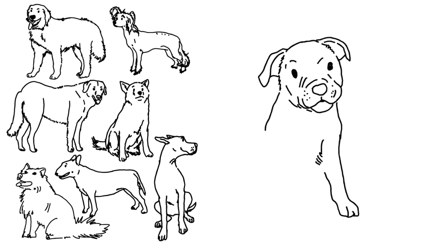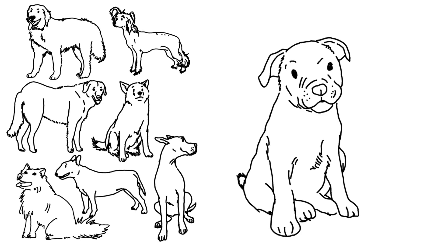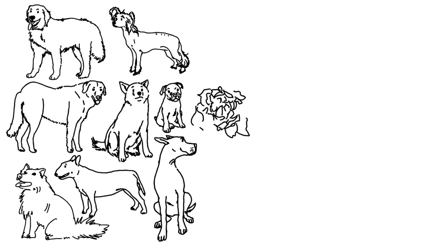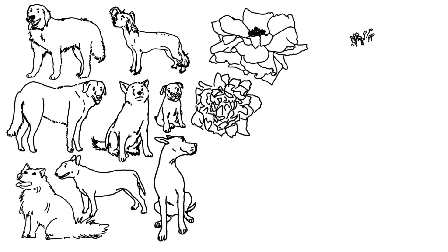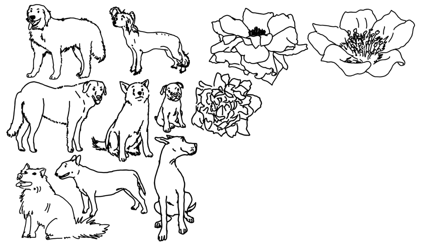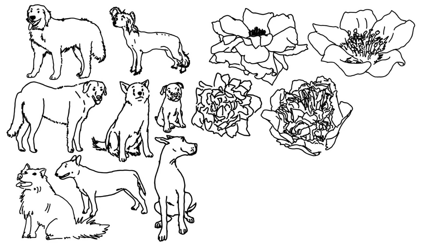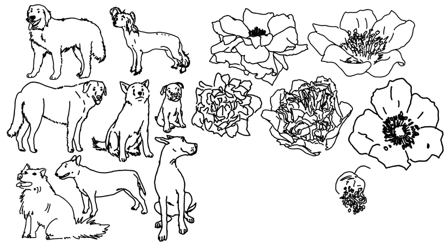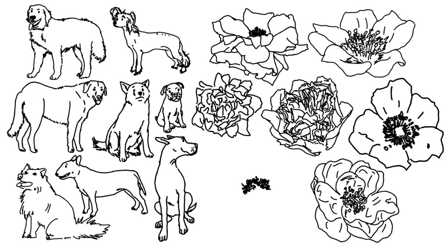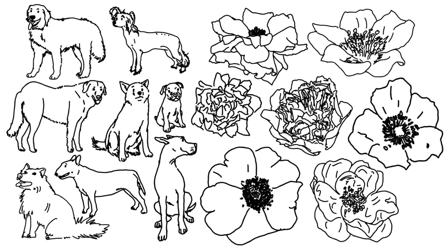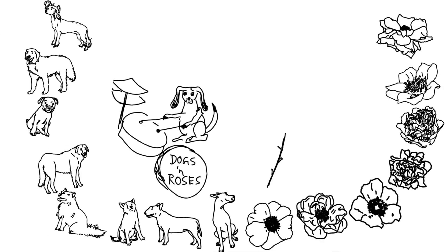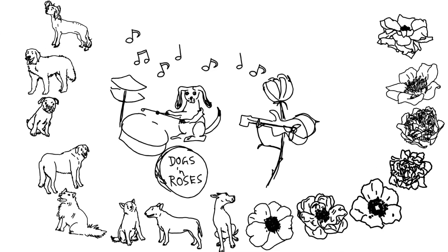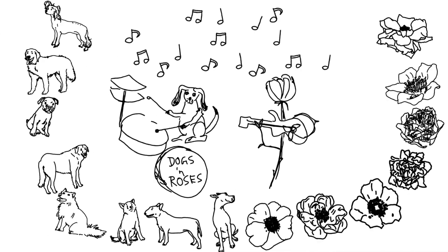Think of the hundreds of different breeds of dogs, or the numerous varieties of roses. Those all represent genetic diversity within the single species of dogs and the single species of roses. Dogs and roses — sounds like a rock group.